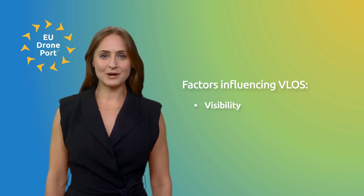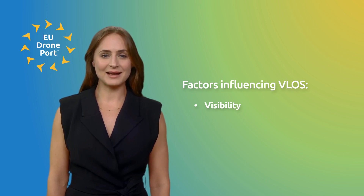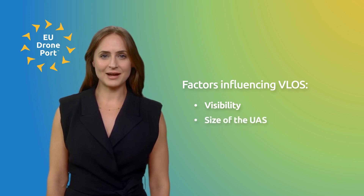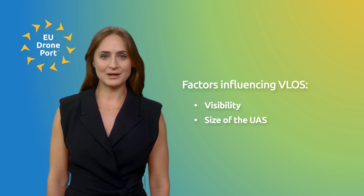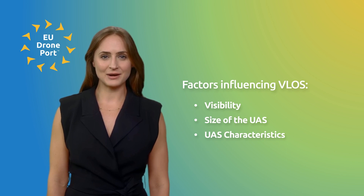Visibility: the operational area and weather conditions should allow the pilot to maintain unaided visual contact with the UAS. A minimum visibility of 5 kilometers is recommended. Size of the UAS: larger UAS are easier to see and track. UAS characteristics: this includes aspects like the color of the UAS, how it contrasts against the background, and the brightness of its lights.